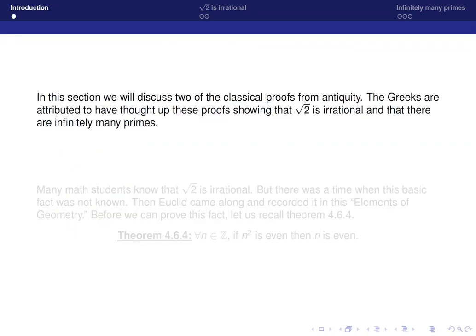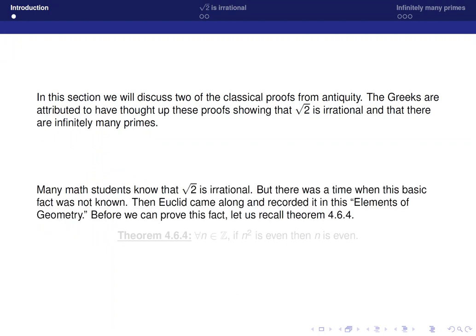So let's begin with square root of 2. In order to prove that square root of 2 is irrational, we need to recall the theorem that we discussed in the previous section that was called Theorem 4.6.4.